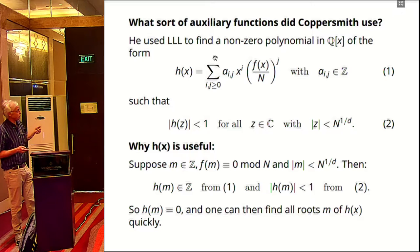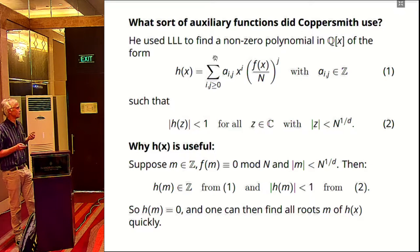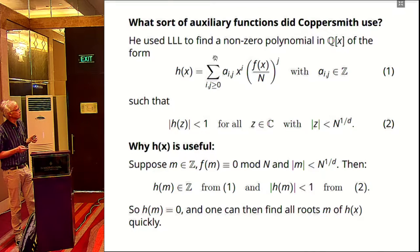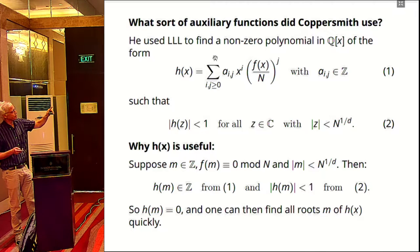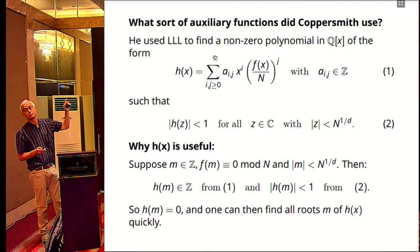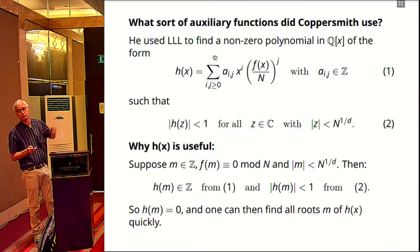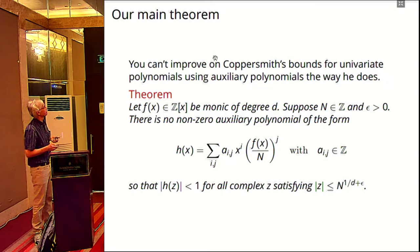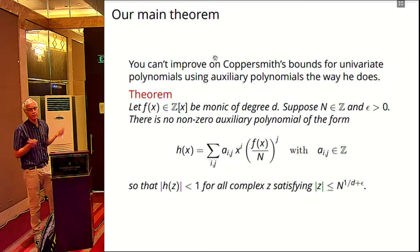This was Coppersmith's brilliant idea: you could convert the problem of finding such a polynomial into a problem of finding a small non-zero vector in a lattice. The question for us was, are there polynomials that look like this for which equation two can be improved? Can you get them absolute value less than one for all z in a slightly bigger disk — N^(1/D + ε)? And this is what we prove: they're not there.